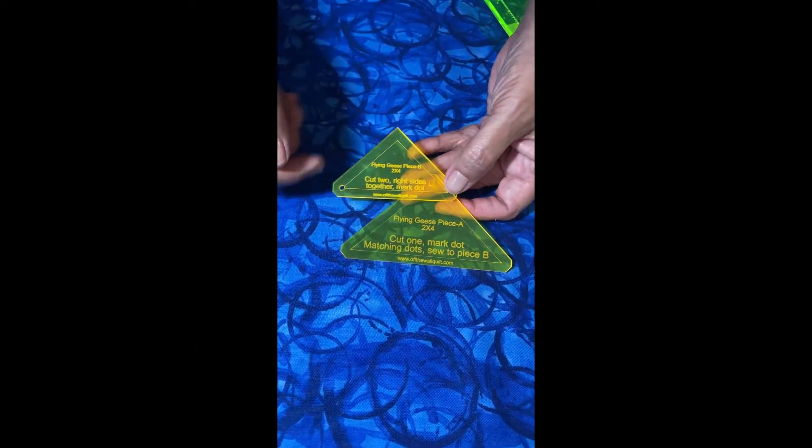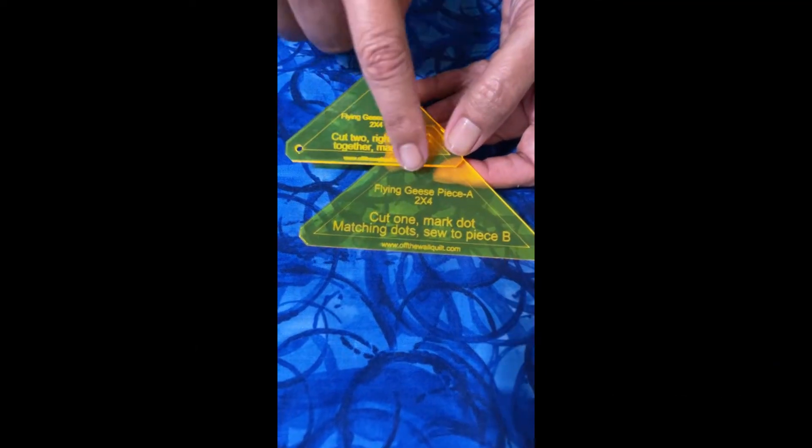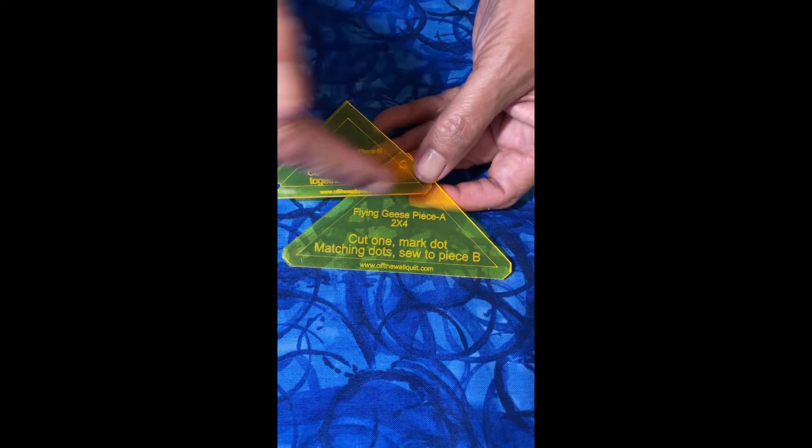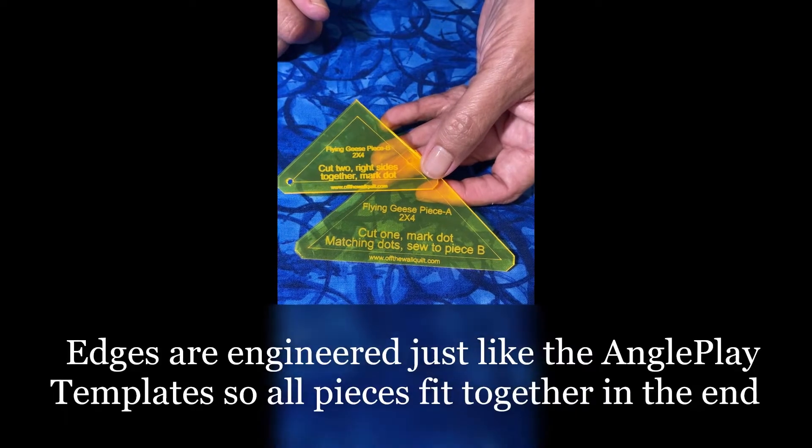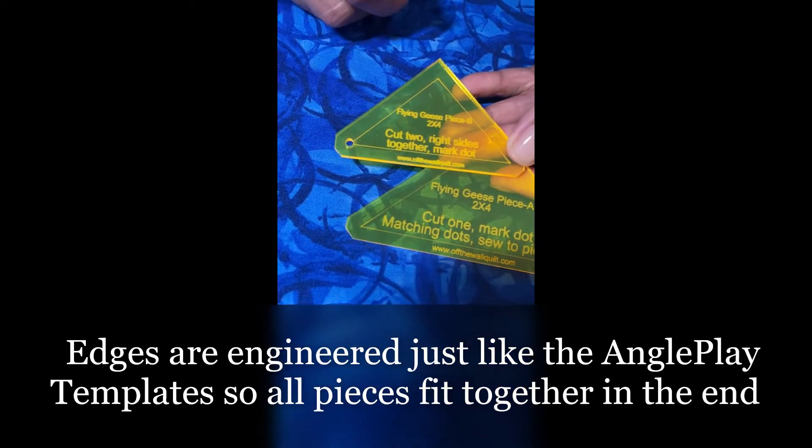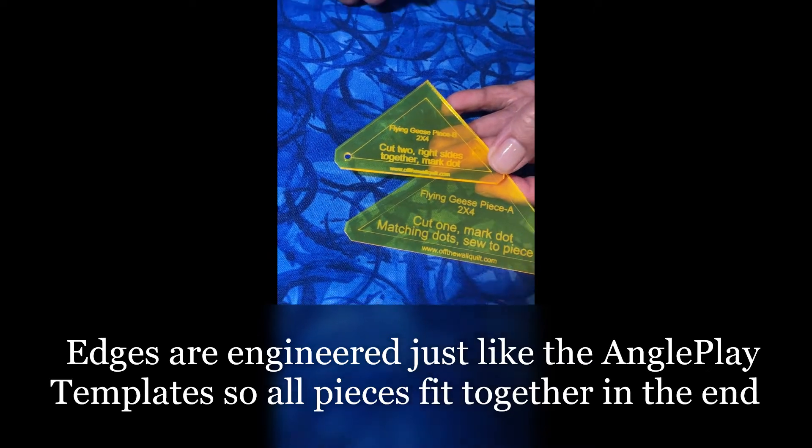This is piece A and it's going to give me a finished 2x4 inch flying geese, and this is piece B and that will make the sides so they make a match set. You can see my edges are all engineered just like the angle plate template so everything is going to fit together.